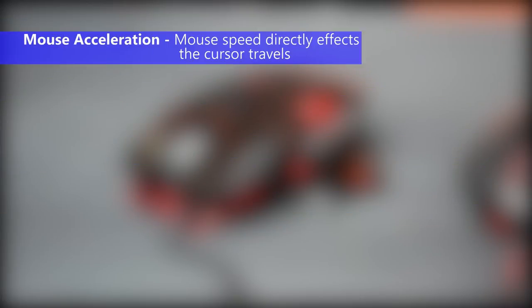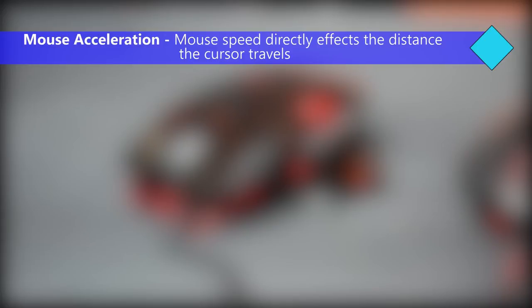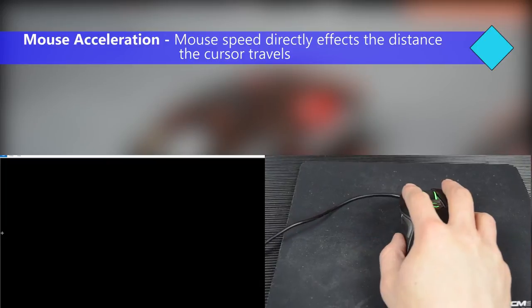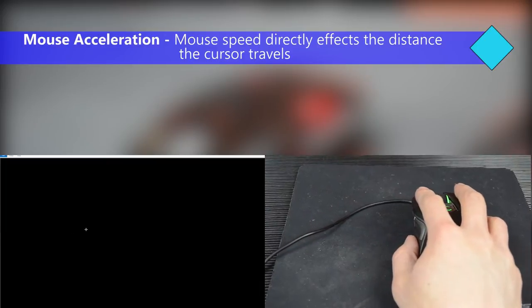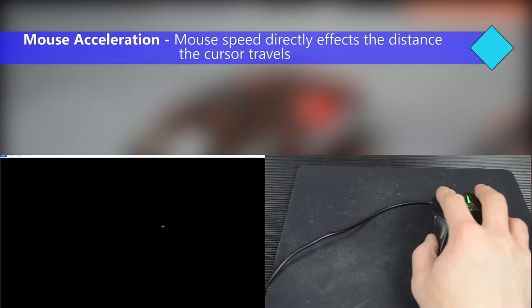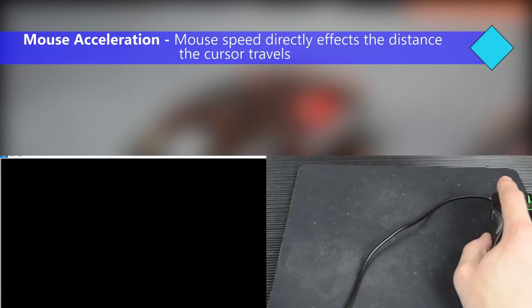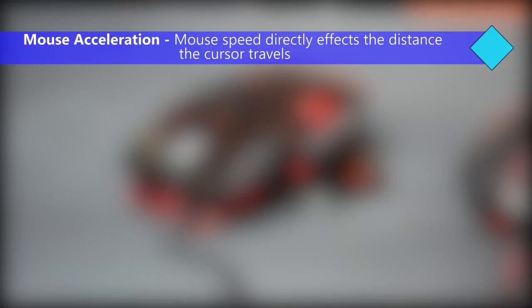Next we have mouse acceleration. This describes the speed of your cursor in relation to how fast you move your mouse. So if you move your mouse halfway across your mouse pad slowly and then repeat it much quicker, you will have moved much further the second time. This is generally considered not a desirable thing whilst gaming.